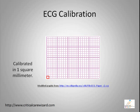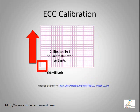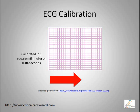The standard calibration of an ECG paper is one millimeter. The vertical calibration is measured in millivolts — that is, the amount of electrical energy generated in the heart. The amplitude of one small box is 0.04 millivolts. Horizontal calibration is measured in seconds — that is, the amount of time the electrical energy traveled from one heart structure to the other. One small box is 0.04 seconds.